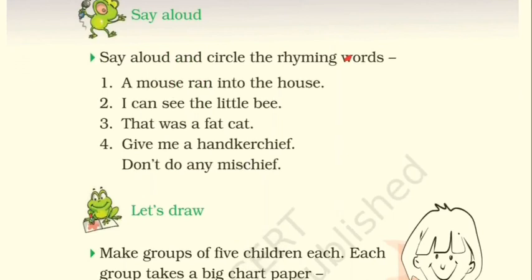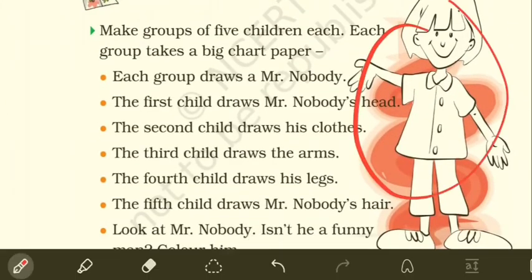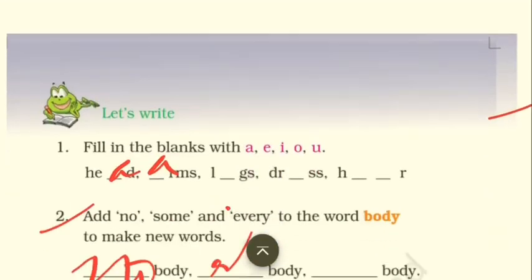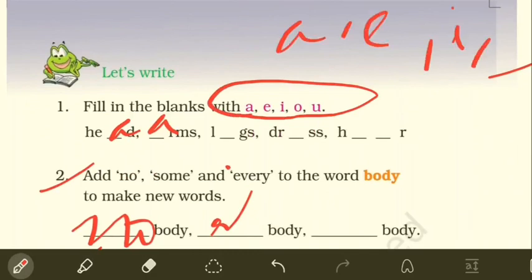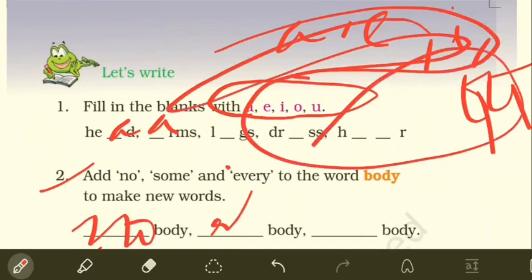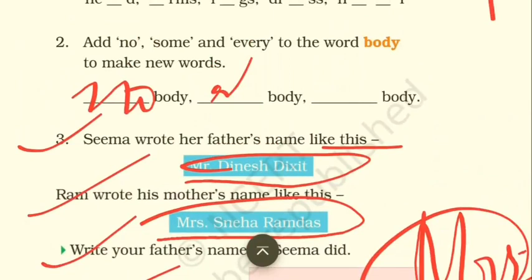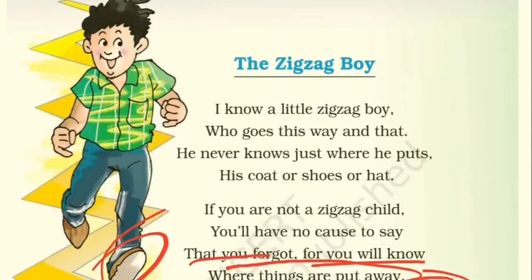We also did 'Let's Share,' picking the things that we did. Then 'Say Aloud' — a pronunciation drill where we learned rhyming words like mouse/house, see/bee, and so on. After that we focused on the drawing activity — you can try it on your own. We filled in vowels a, e, i, o, u, and I told you these letters are called vowels. We discussed how to write your parents' names: 'Mr.' for a male, 'Mrs.' for a married female.